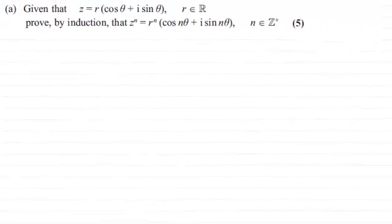Hi there. Now for this part of the question we're given that Z equals R multiplied with cos theta plus I sine theta, where R is any real number.